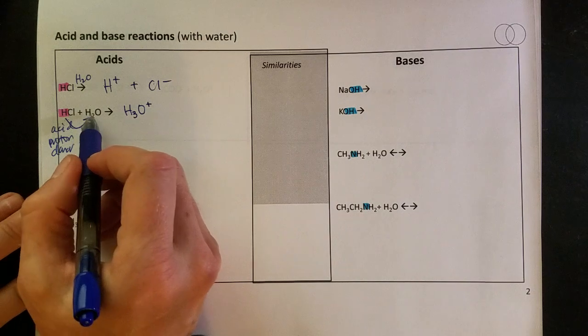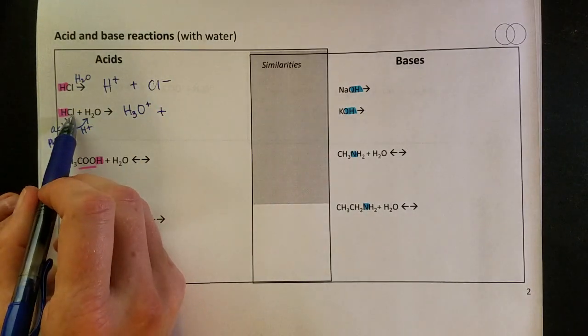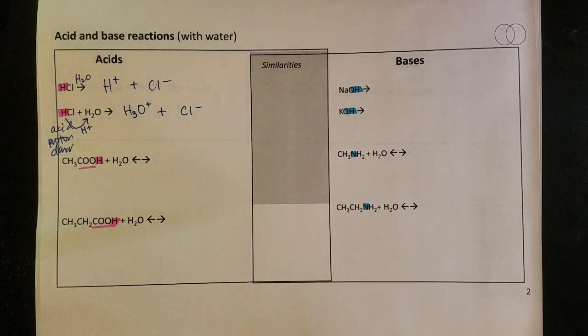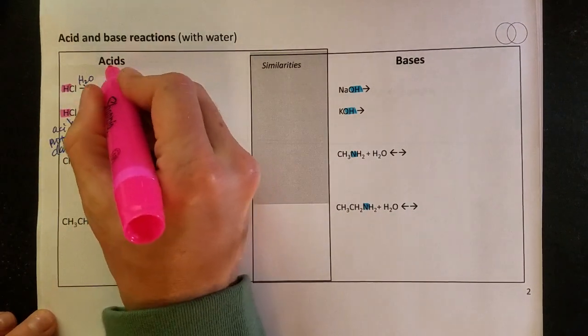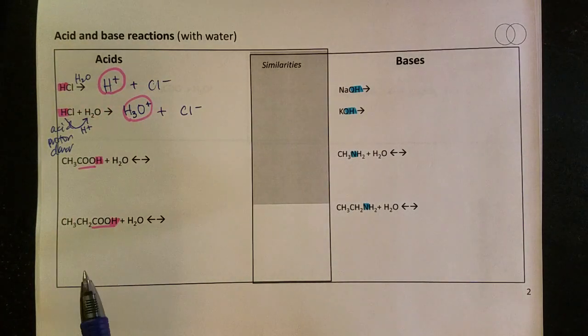And now it has a positive charge on it because that H plus moved over. If I think about what's left over here, that would be Cl minus, and so I can see that this is producing protons, just drawn in a couple of different ways.